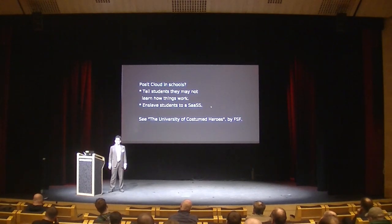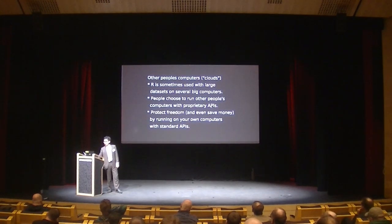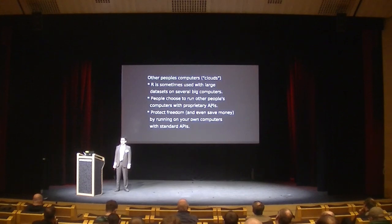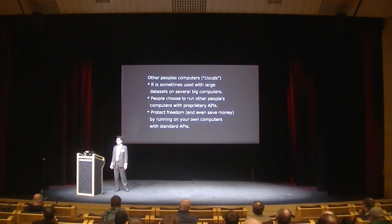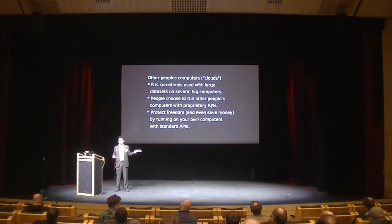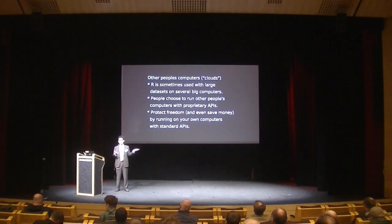I suspect Posit Cloud isn't doing so much yet, so it's probably pretty easy to move off of it — but is it going to get worse? Another issue bigger in R is that a lot of times people use R with pretty big datasets, or things requiring a lot of computation or GPUs. So people might want to run R on one or several big computers in a data center, connecting by laptop. A lot of times people are running R on someone else's computer through some proprietary API. It would be nice if they could rent free computers instead of renting proprietary computers with proprietary interfaces.